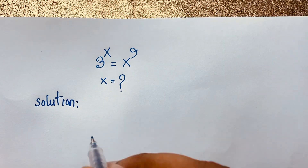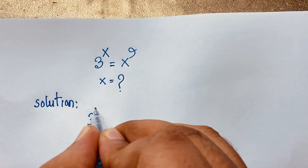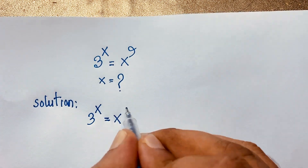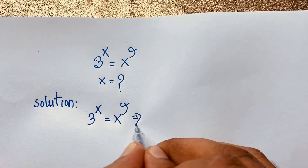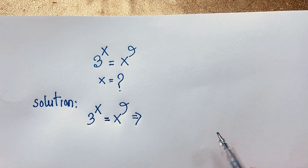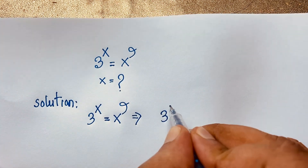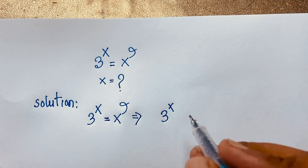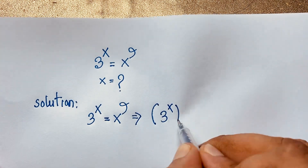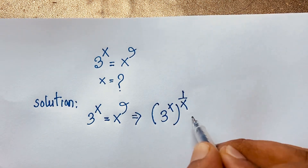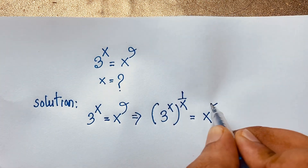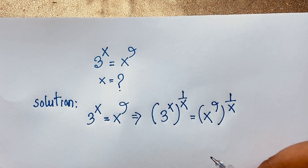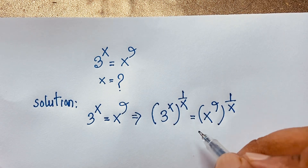Our question is 3 to the power x is equal to x to the power 9. At this moment you can see here 3 to the power x, and if I want to isolate x, I use both-side x root — that is, I apply exponent 1 over x to both sides. So it will be (3^x)^(1/x) and (x^9)^(1/x).